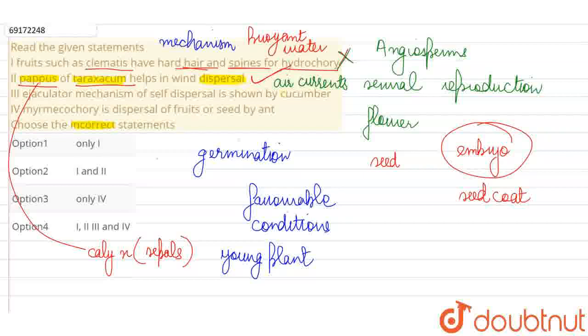Then we are saying that in the cucumber, we have a self-dispersal ejaculator mechanism. So this is also true. We can talk about the cucumber plant.